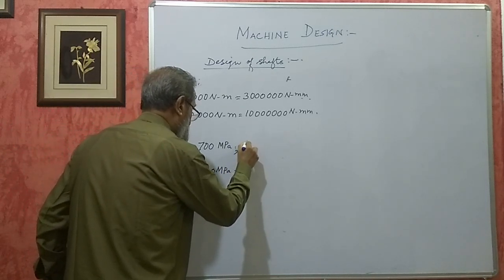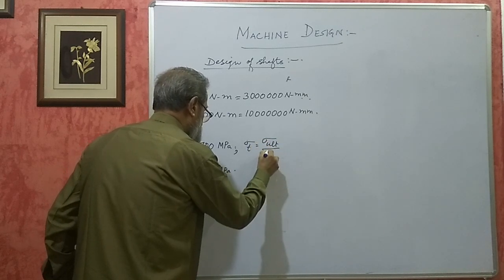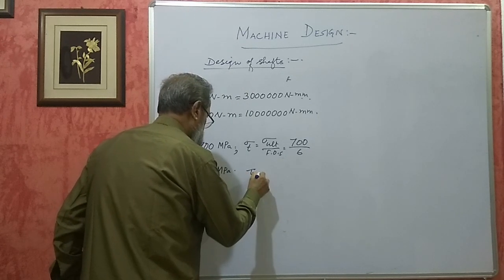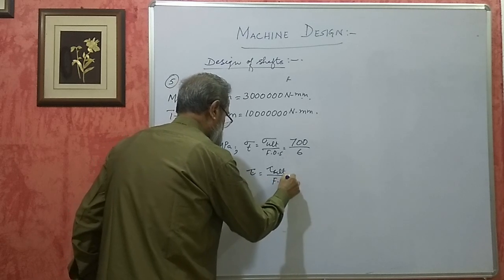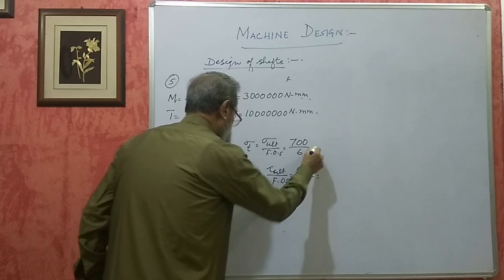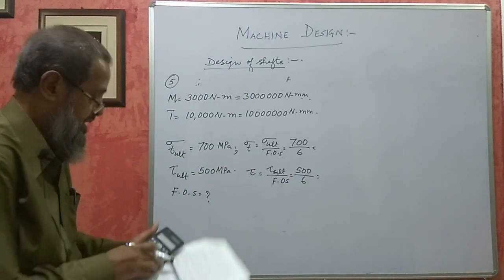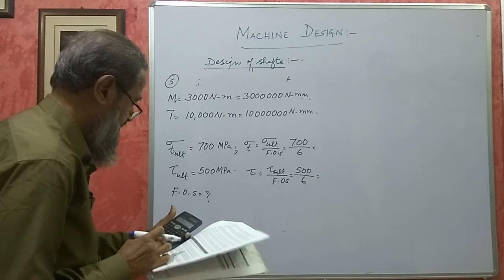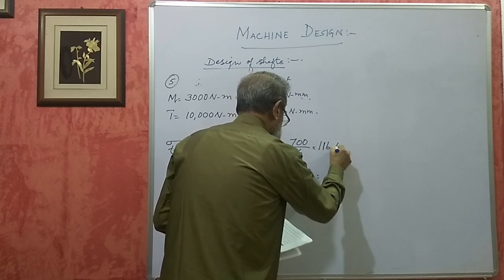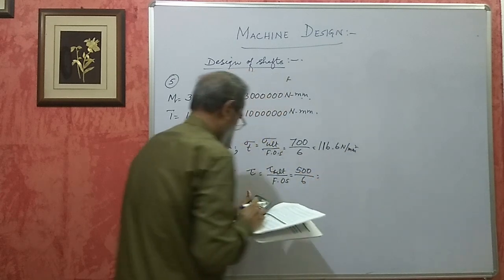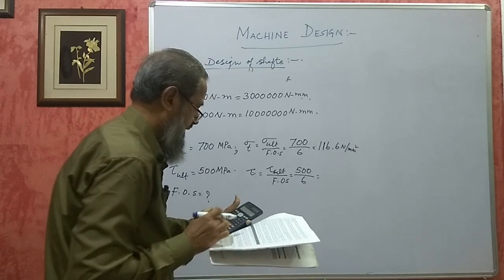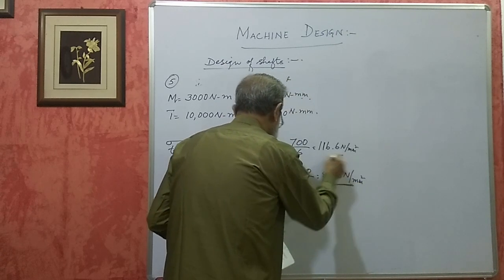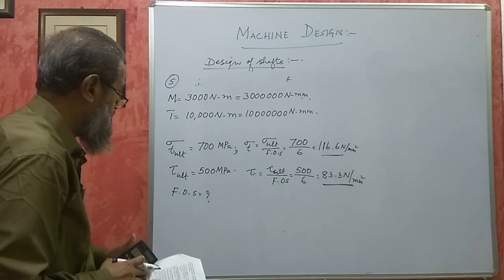Permissible tensile stress = ultimate tensile stress / factor of safety = 700 / 6 = 116.6 N/mm². Permissible shear stress tau = 500 / 6 = 83.3 N/mm². So these are the permissible tensile and shear stresses. Since both are given, we have to use both formulas.